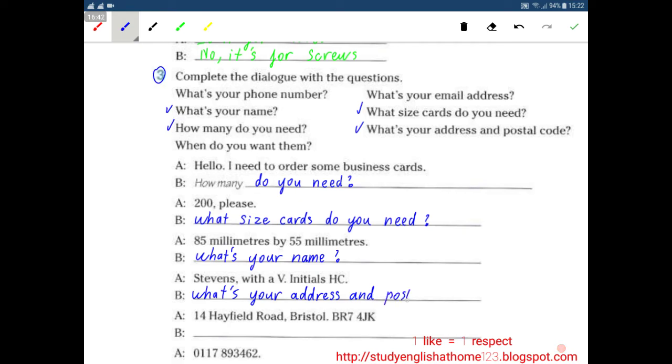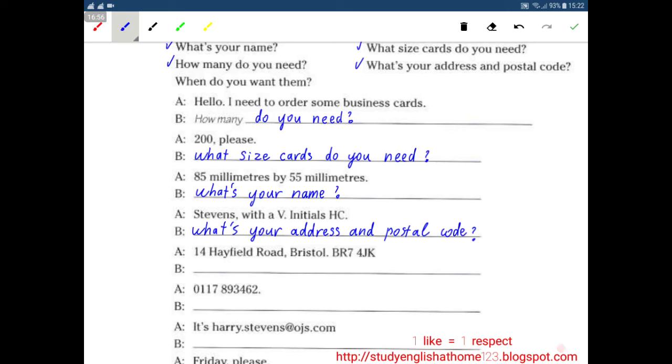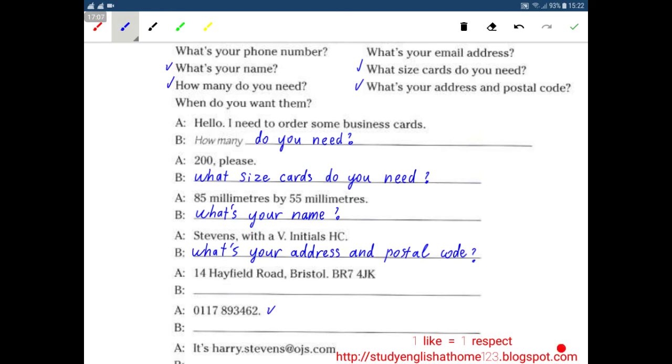And postal code. 14 Hayfield Road, Bristol, BR7 4JK. Then the answer is the phone number so what's your phone number?